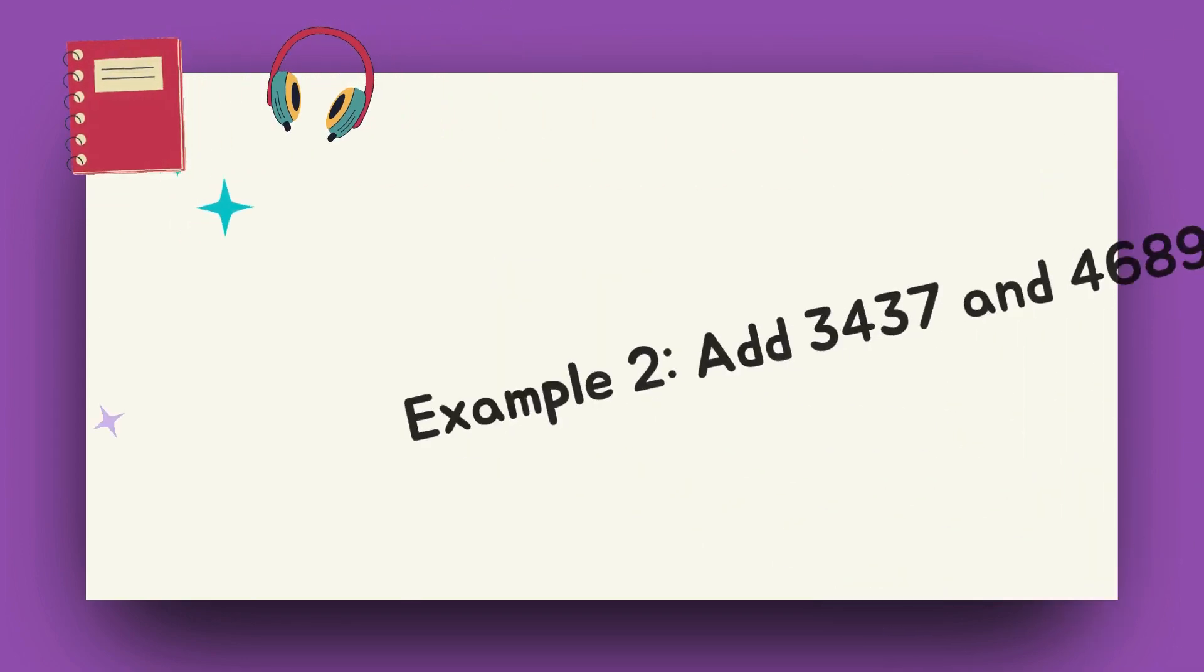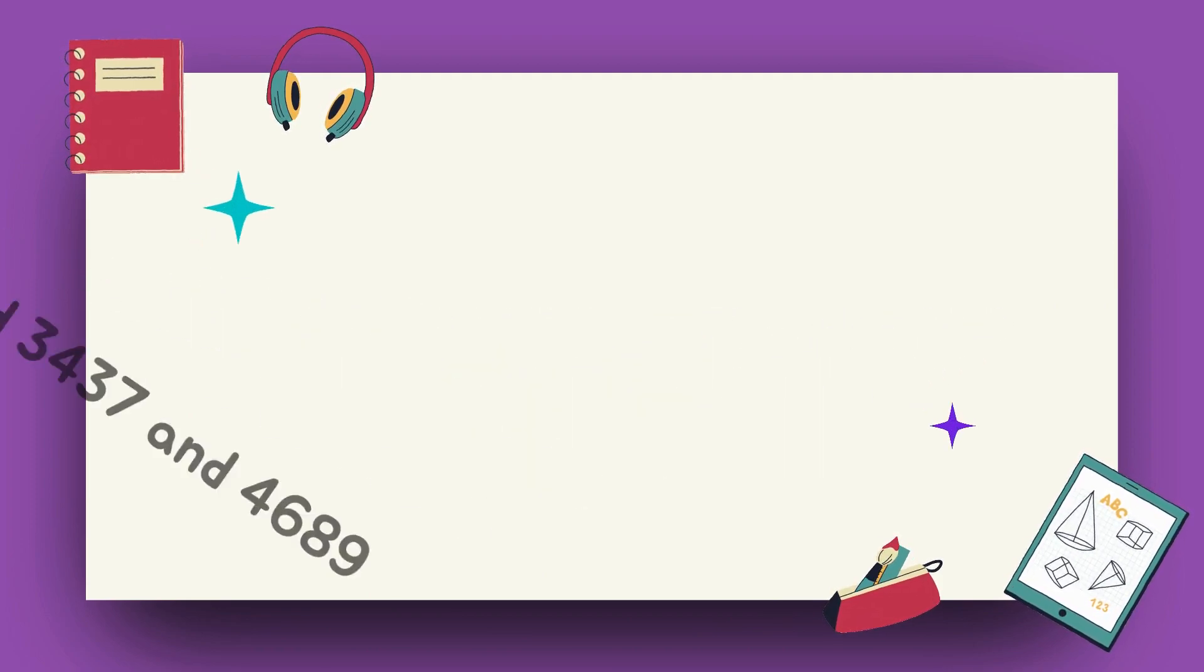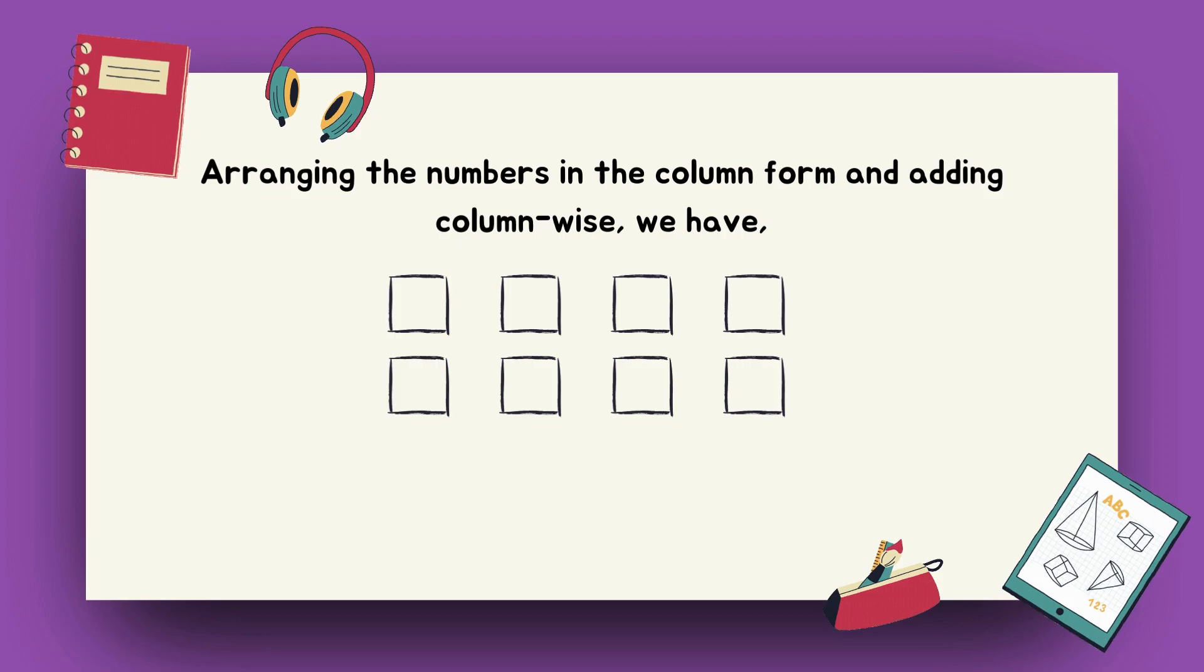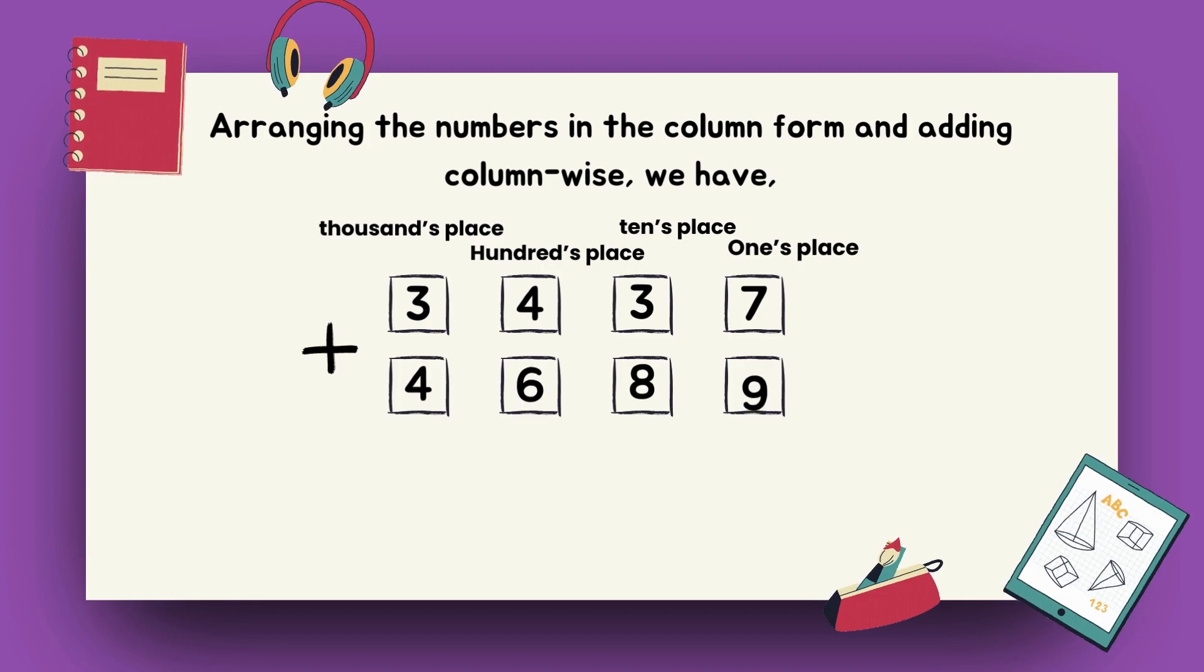Example 2: Add 3437 and 4689. Arranging the numbers in the column form and adding column-wise, we have 3437 plus 4689.